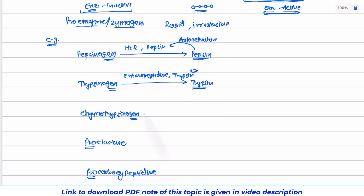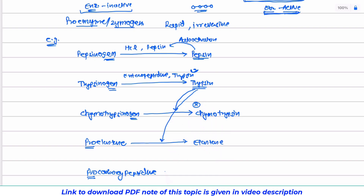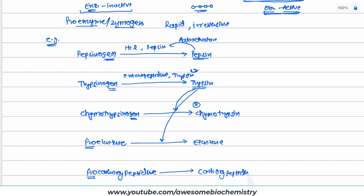Chymotrypsinogen is converted to its active form chymotrypsin, and this activation is catalyzed by trypsin — this is not an example of auto-activation. Proelastase is activated to elastase, also catalyzed by trypsin. Procarboxypeptidase is activated to carboxypeptidase, also catalyzed by trypsin. So chymotrypsin, elastase, and carboxypeptidase are not examples of auto-activation, whereas pepsin and trypsin are. In all of these activation processes, one small polypeptide fragment is released.